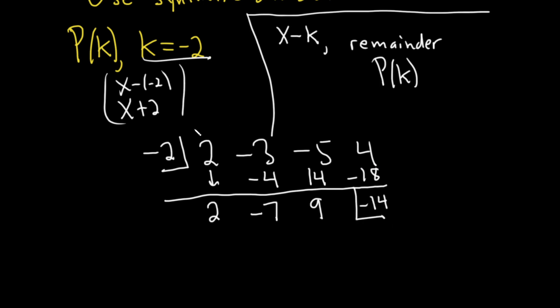Let's just check. Bring it down: 2 times negative 2 is negative 4. We add and get negative 7. Negative 7 times negative 2 is 14. We add and get 9. 9 times negative 2 is negative 18. We add and get negative 14.